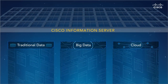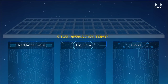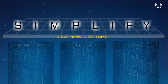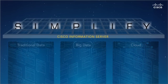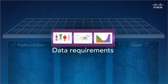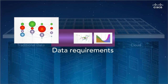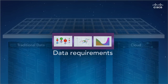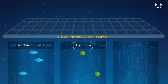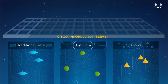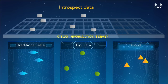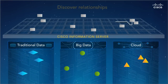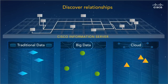Here's how the Cisco Information Server simplifies data integration so you can use your data effectively. Say you're building a business application which has these unique data requirements using data from these sources. Cisco Information Server will automatically introspect all available data and discover the relationships.